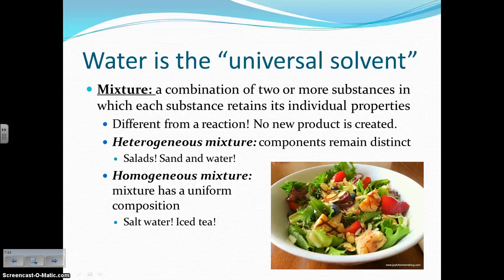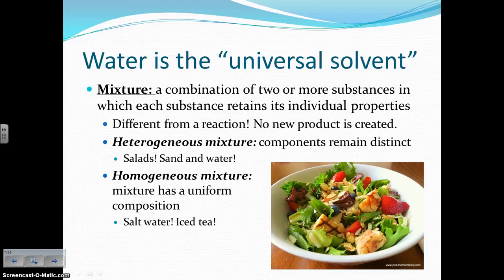There are two types of mixtures. A heterogeneous mixture is when the components remain distinct, meaning they can still be separated from one another — like a salad, or sand and water where the sand would settle and you'd be able to separate it out. A homogeneous mixture means the mixture has a uniform composition; it's completely blended and cannot be unblended without some sort of reaction. An example of a homogeneous mixture would be salt water, which is not going to settle, or iced tea — you can't take the tea out of the water once you've made it.